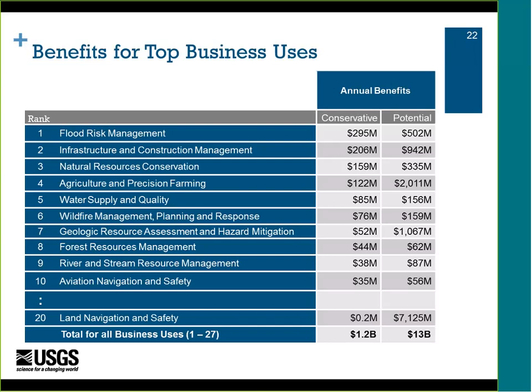This table shows the top business users ranked by total benefits identified. When benefits were identified as a range, the conservative number represents the lower end and the potential number represents the high end. With the exception of the potential benefit of $7 billion associated with land navigation, all dollar benefits represent immediate needs. The land navigation benefit was realized from vehicle fuel reductions achievable by intelligent vehicle navigation systems that are beginning to appear on the market.